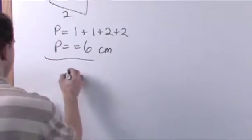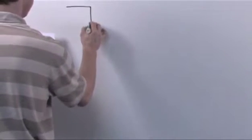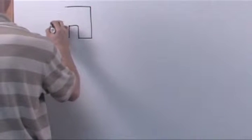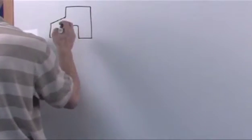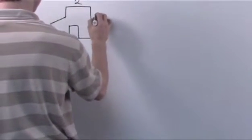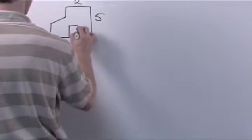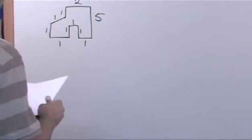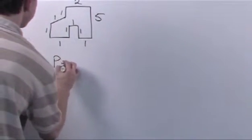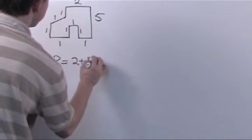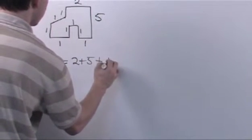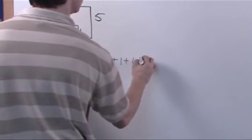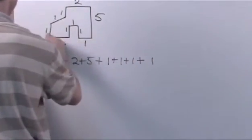But if we had a complicated shape, something like this — with sides of two, five, one, one, one, one, one, one, one, one — then the perimeter is just going to be two plus five plus one plus one plus one plus one plus one plus one plus one plus one.